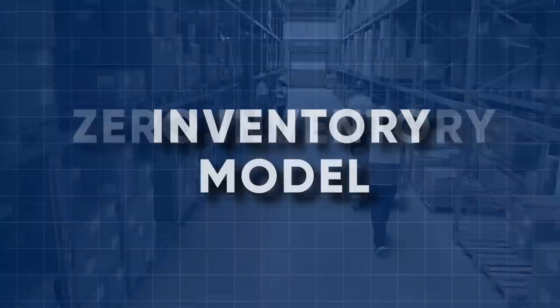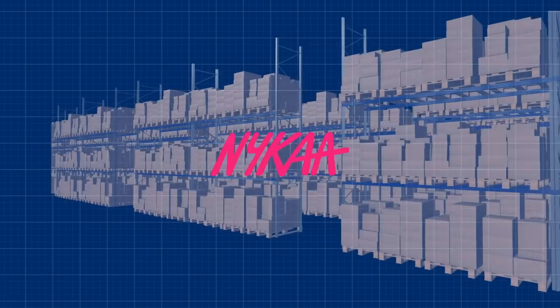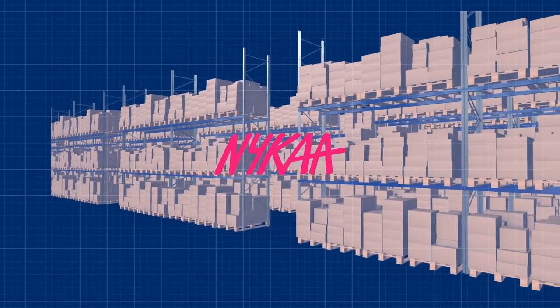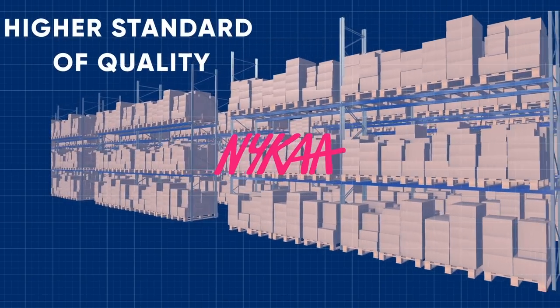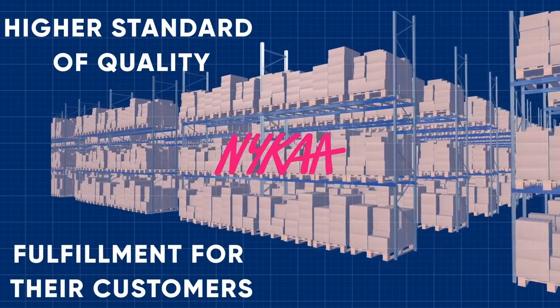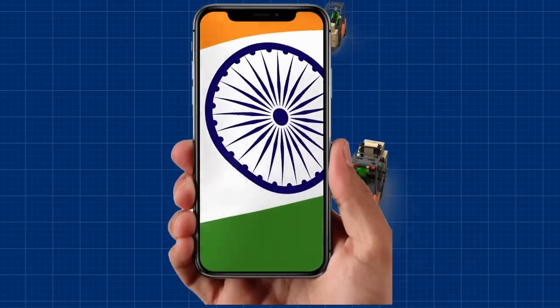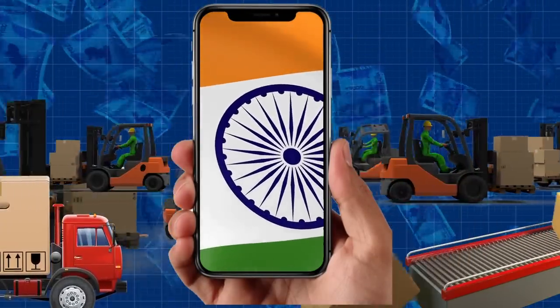The other one being the inventory model. And Nika is a pretty good example of this because they actually store the products themselves physically as inventory, which means that they're able to guarantee a higher standard of quality and fulfillment for their customers because they're in complete control of that inventory. In India, the marketplace model has actually really thrived, which is why there's tons of marketplaces everywhere that you look.